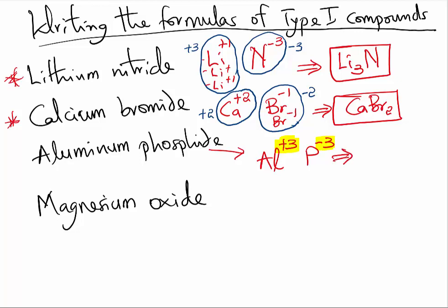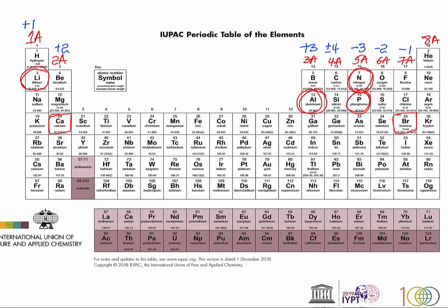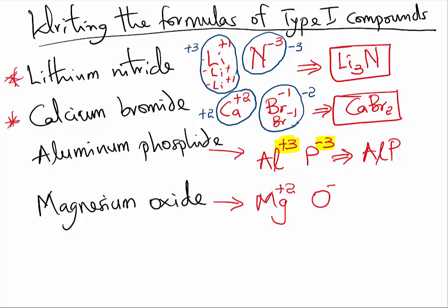What about magnesium oxide? Should be very straightforward as well. Magnesium and oxygen. Magnesium is from group 2A in the periodic table. Oxygen is from group 6A in the periodic table. Magnesium will have a charge of plus 2. Oxygen will have a charge of minus 2. Since the total charges already are balanced, then we simply write MgO.